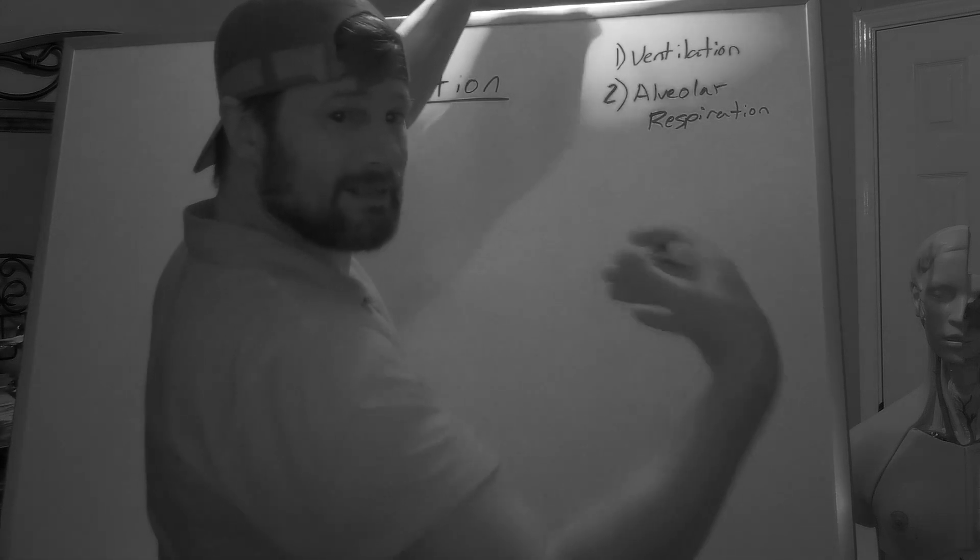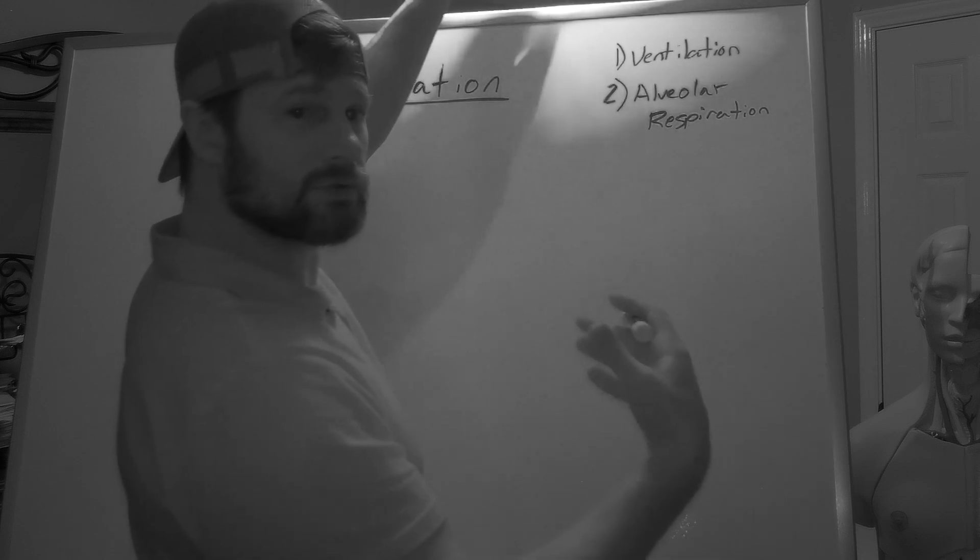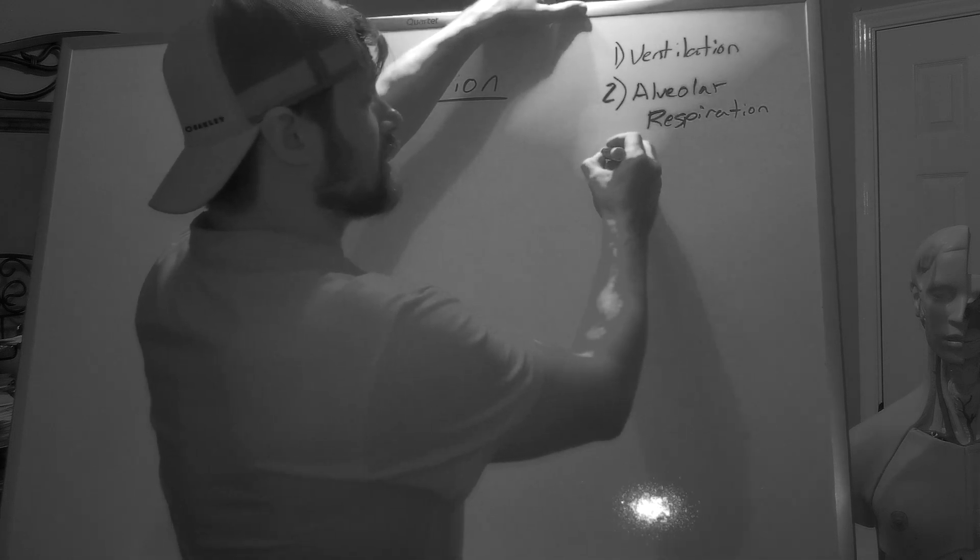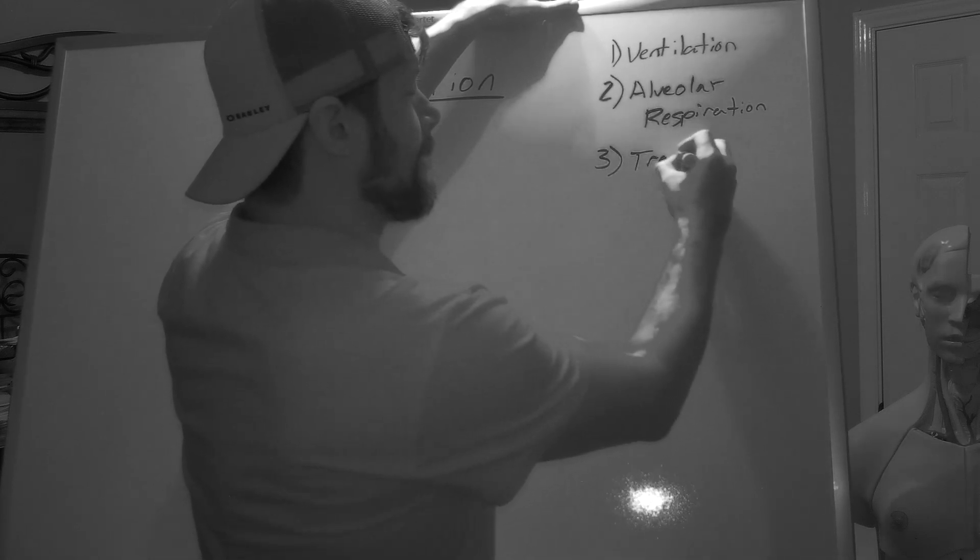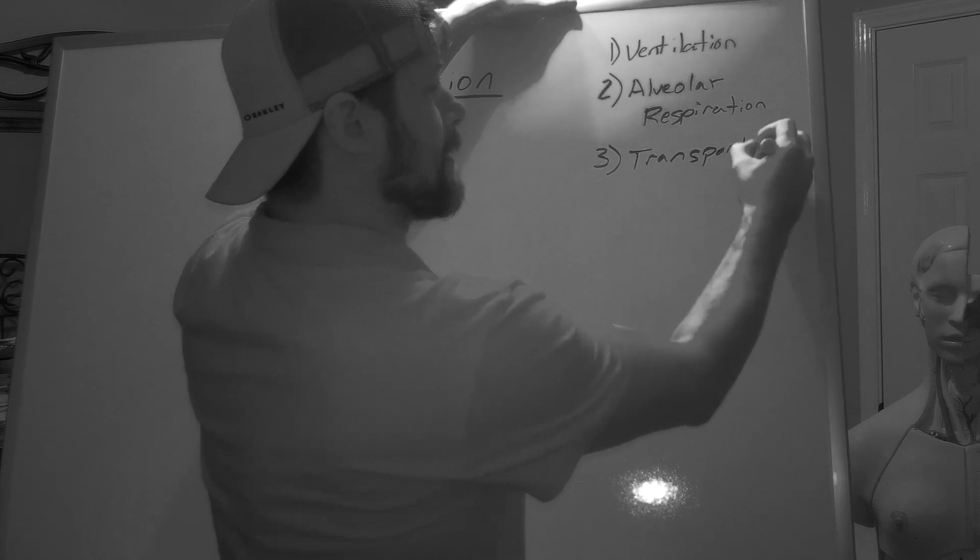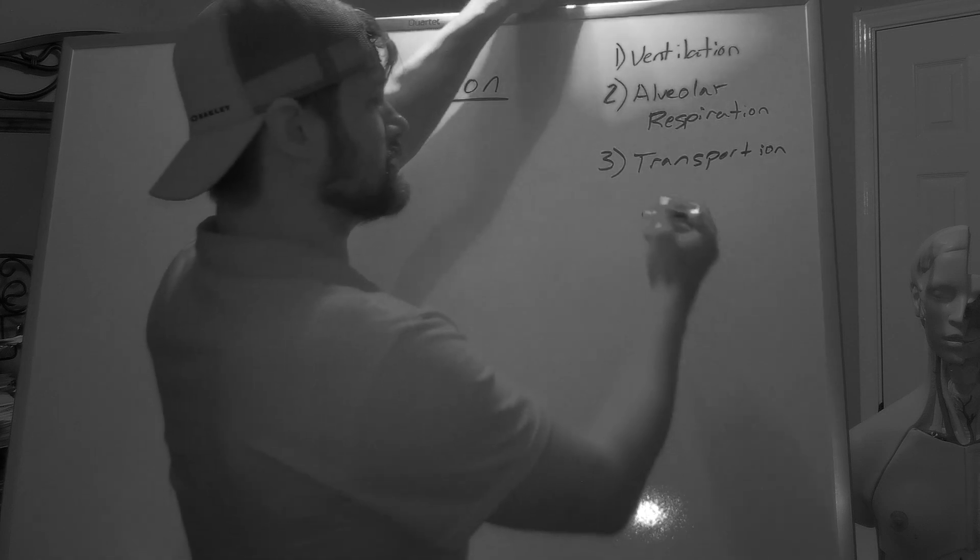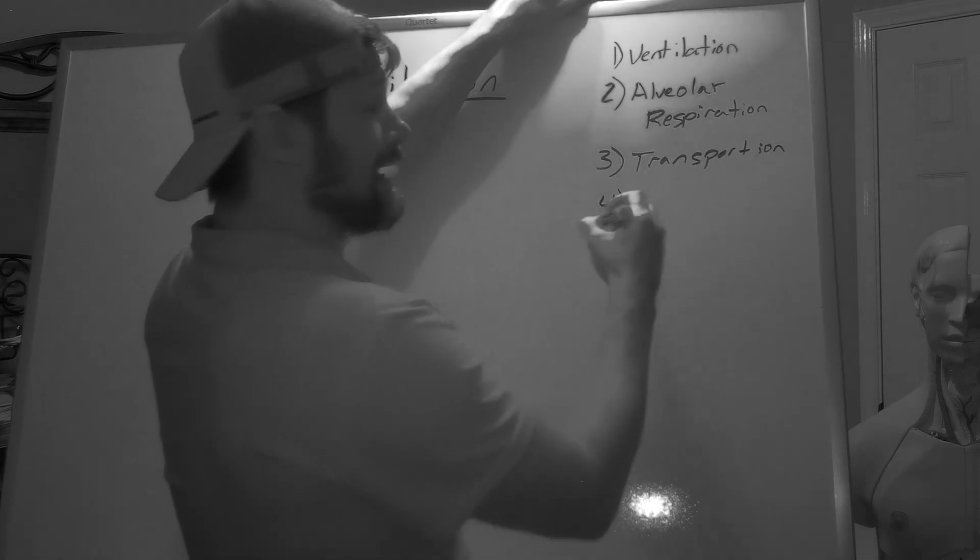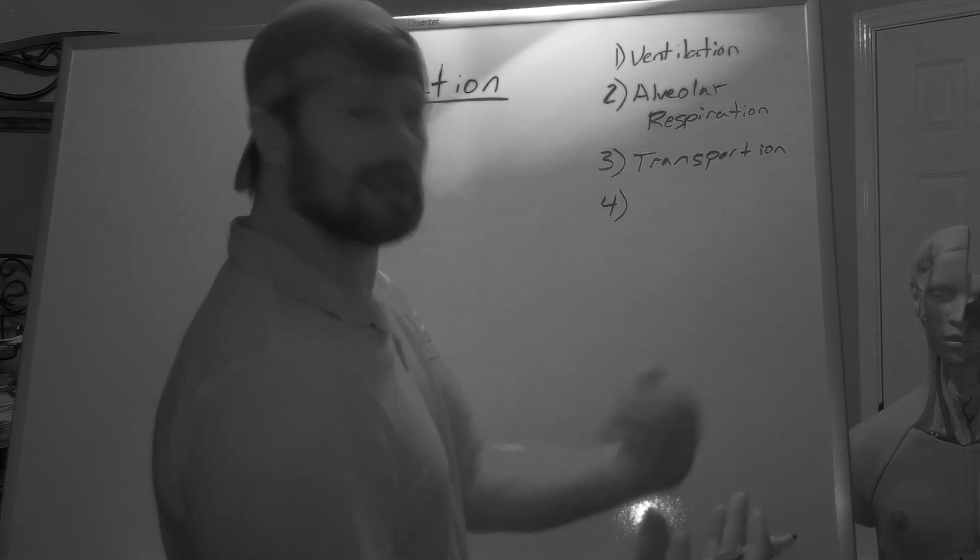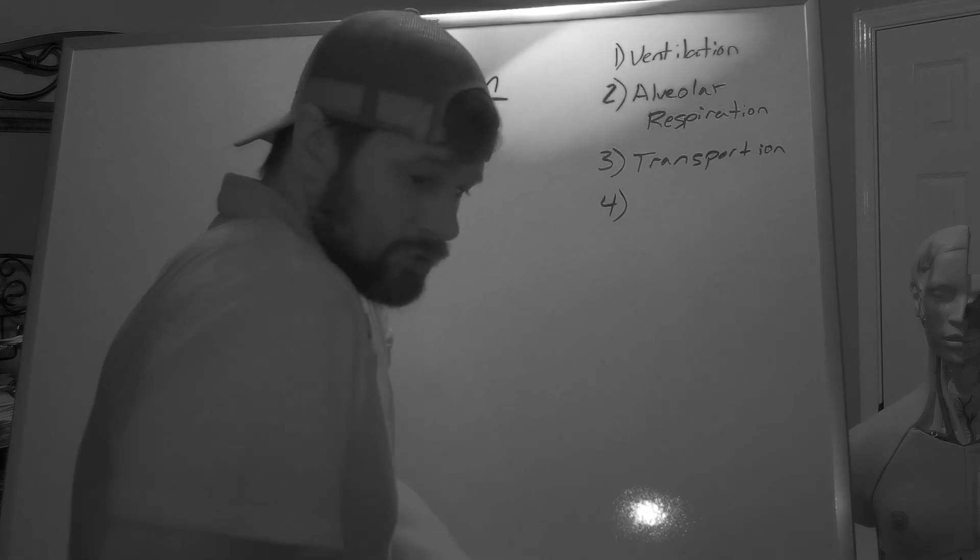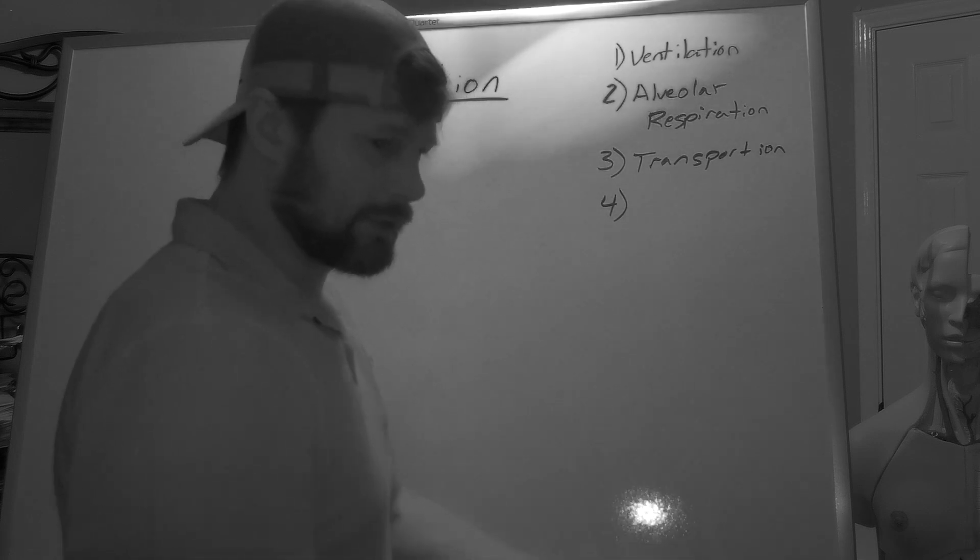Once that oxygen gets into the blood, and this is going to relate back to CO2 trying to get back out as well, once it gets into the blood, that oxygen is going to need to get transported. Transportation is the third major process involved in the respiratory system. That oxygen makes it back out to the tissues, whichever tissue it is. Oxygen goes to that tissue. That oxygen gets used in cellular respiration.